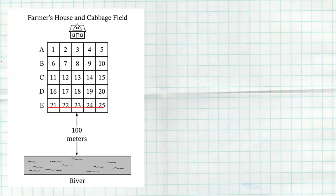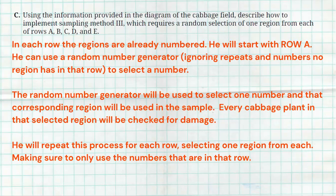All right, and finally, question C wants us to use the information provided in the diagram to describe how we're going to implement method 3. Now remember, method 3 is the stratified one. We're going to select one region from each row. So here's what I wrote up for this. In each row, the regions are already numbered. He will start with row A. He will use a random number generator, ignoring repeats and ignoring numbers that no region in that row has. So if he's in row A, he's only doing 1, 2, 3, 4, and 5. The random number generator will be used to select one number, and that corresponding region will be used for the sample. Every cabbage in that selected region will be checked for damage.